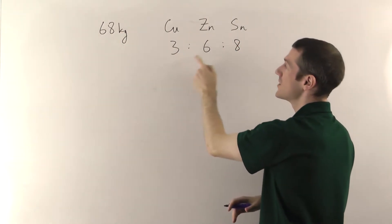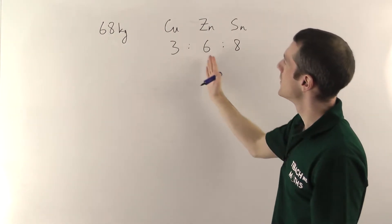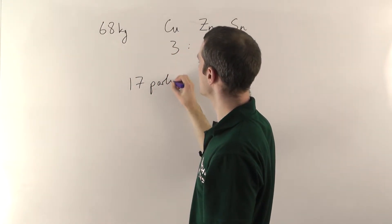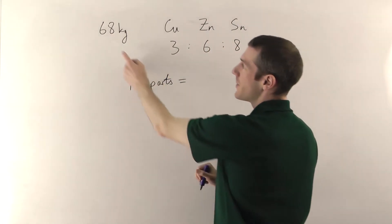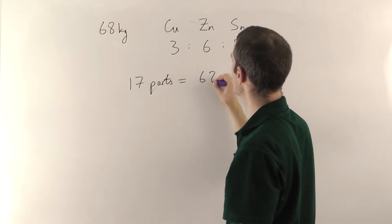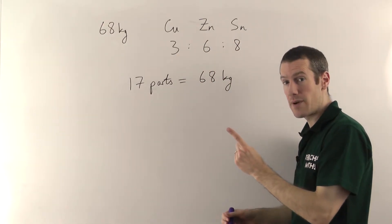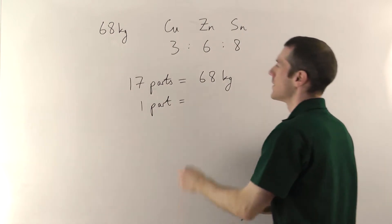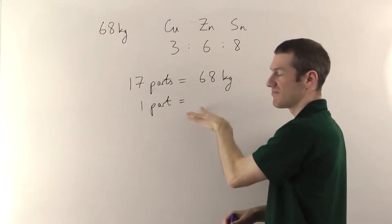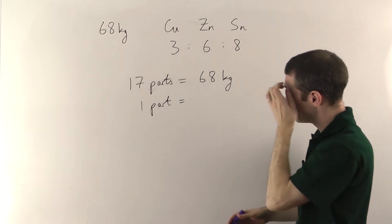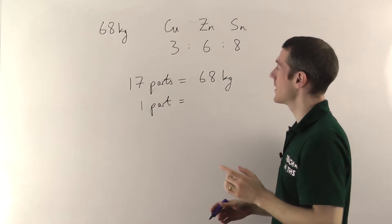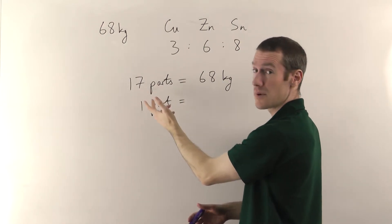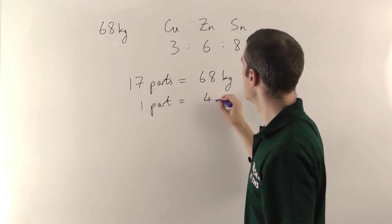We need the total number of parts: 3 plus 6 is 9, add another 8 gives 17 parts altogether. Those 17 parts must equal the total weight of 68 kilograms. Now we find what one part is worth — if 17 parts is 68 kilograms, one part is 17 times less, so we divide by 17. 68 divided by 17 equals 4, because 4 times 17 equals 68. So one part is 4 kilograms.